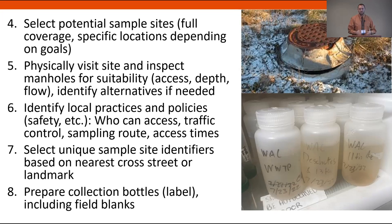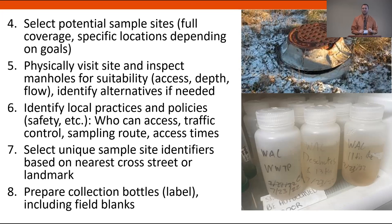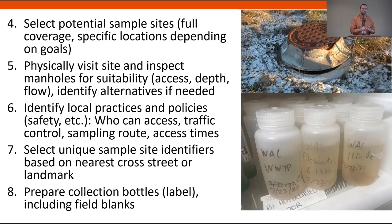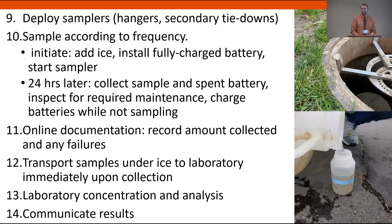We then identify local practices and policies — some cities require us to be with a city worker at all times, while others with manholes in grass areas say come and go as you please. We decide with the community what they want us to do and ensure our safety practices are up to code. Then we assign unique sample site identifiers — typically the nearest cross street — because we have to label samples for the lab. If a sample comes back unlabeled, once we get analysis results we won't know where to place it on the map. So we pick identifiers before collecting and label all bottles before going out.